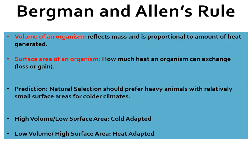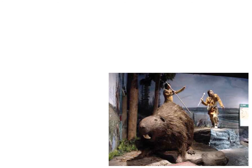Looking at all of life on the planet in terms of multicellular complex organisms, we notice some general patterns — in humans particularly, this is known as Bergmann and Allen's rule. This looks at the volume of the organism versus the surface area. Volume reflects mass and is proportional to the amount of heat generated. Surface area is how much heat an organism can exchange. The prediction is that natural selection should prefer heavy animals with relatively small surface areas for colder climates. High volume, low surface area means cold-adapted; low volume, high surface area means heat-adapted.